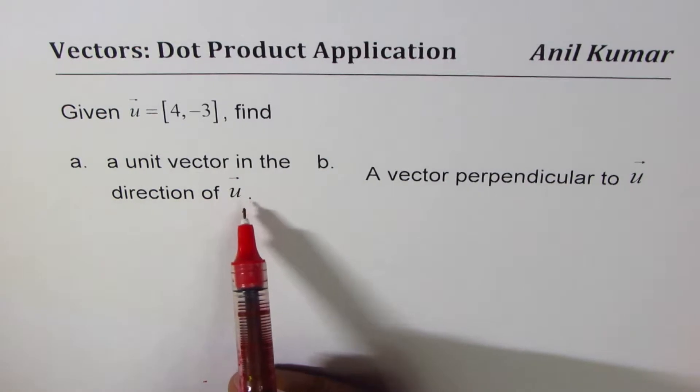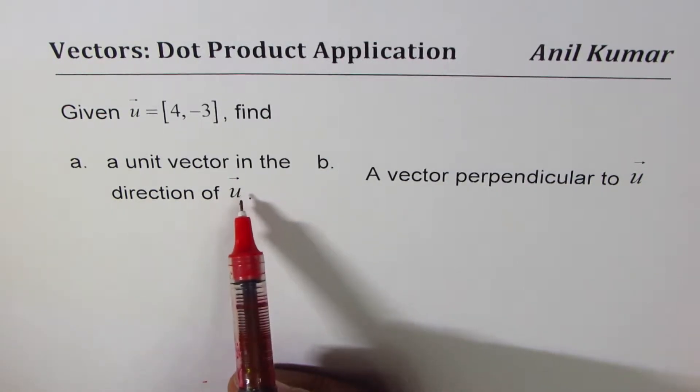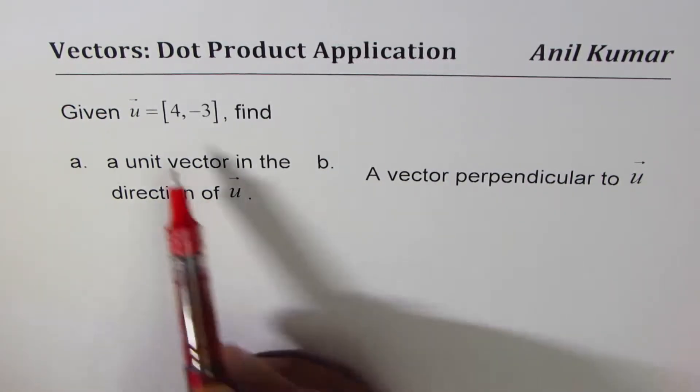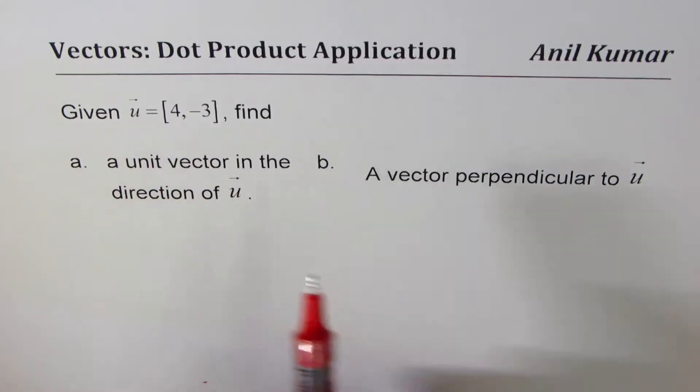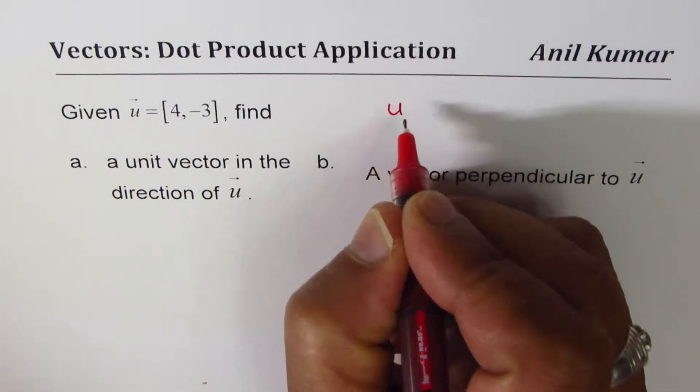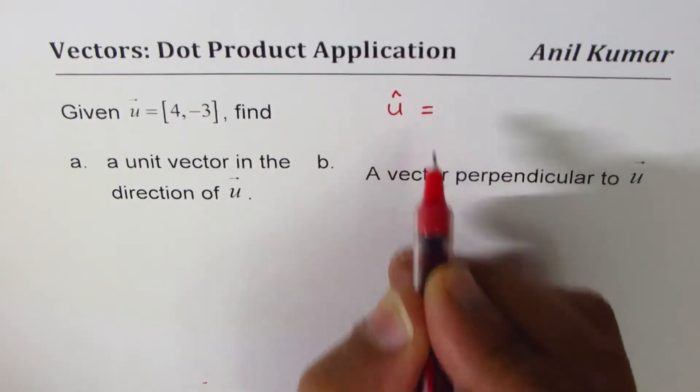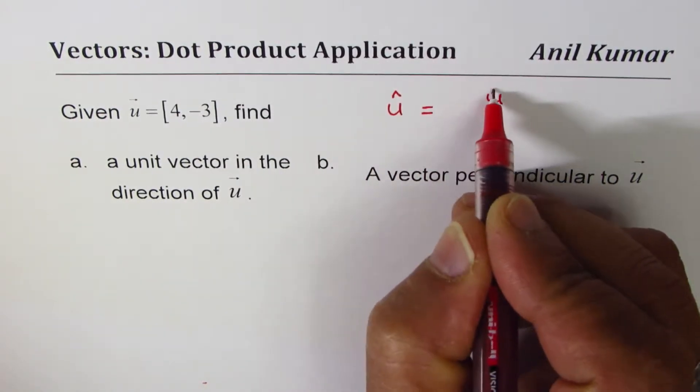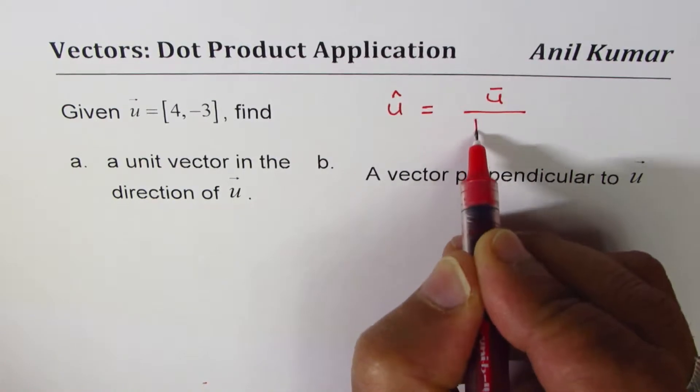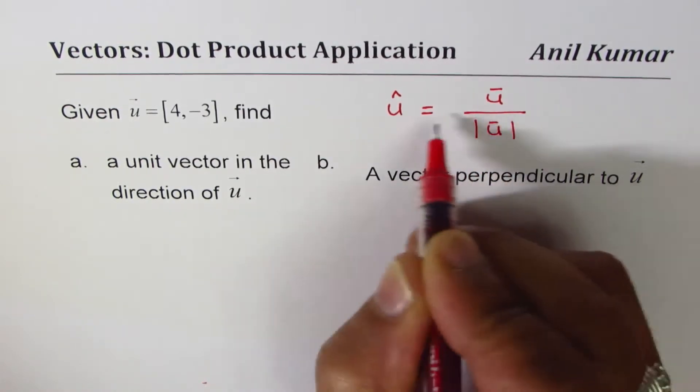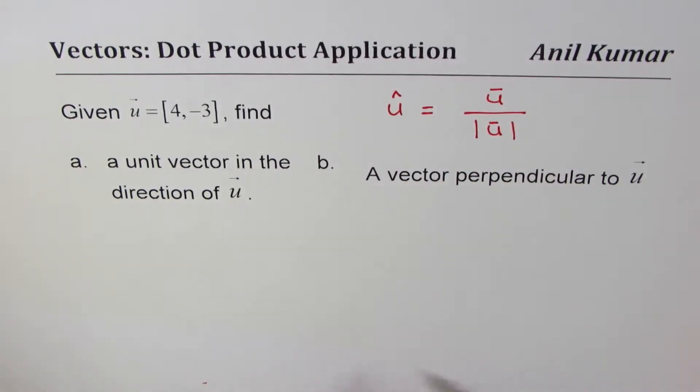As you know, a unit vector will have magnitude of 1 and direction of the given vector u. So you can use this formula: unit vector û = u divided by |u|. That gives you the unit vector. We'll use this formula to find the unit vector.